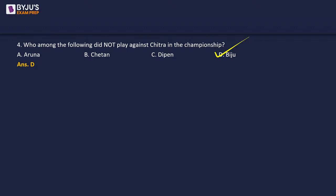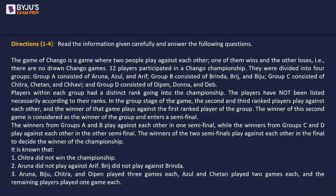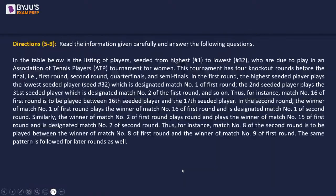To clarify the ranking: the problem simply states that in the group stage, the second and third ranked players play against each other first, and then the winner plays against the first ranked player. The ranks are pre-assigned going into the championship; we deduce who holds each rank from the number of matches played.